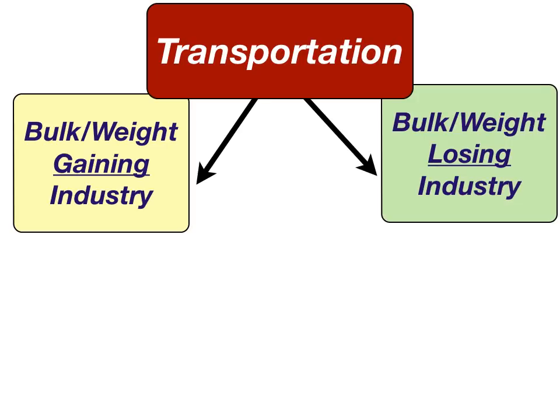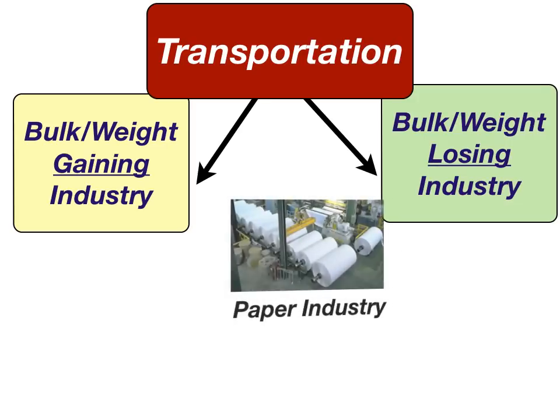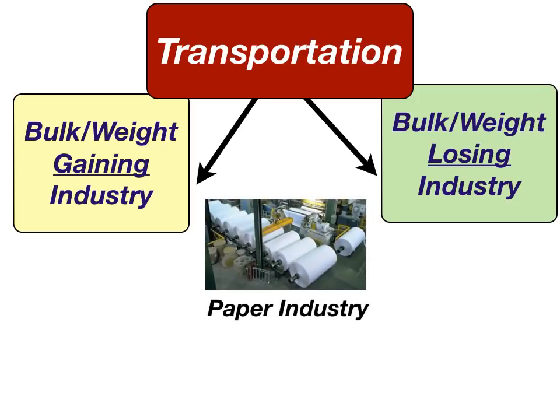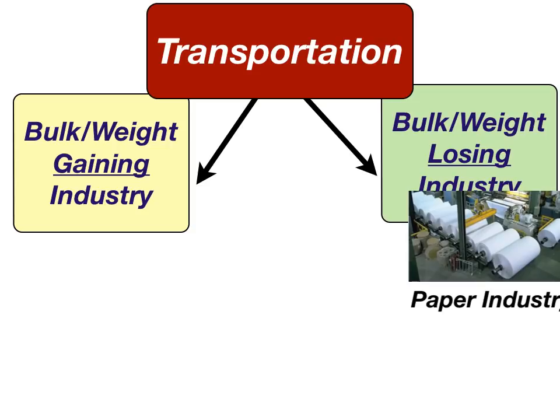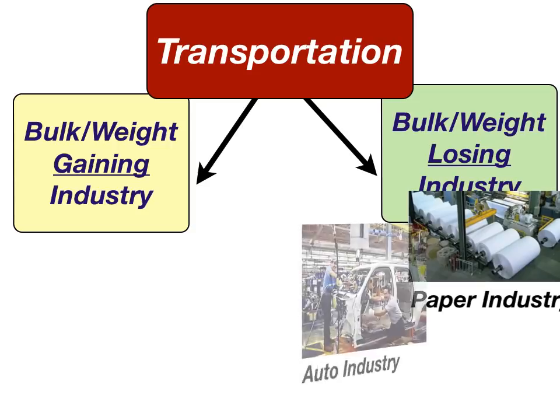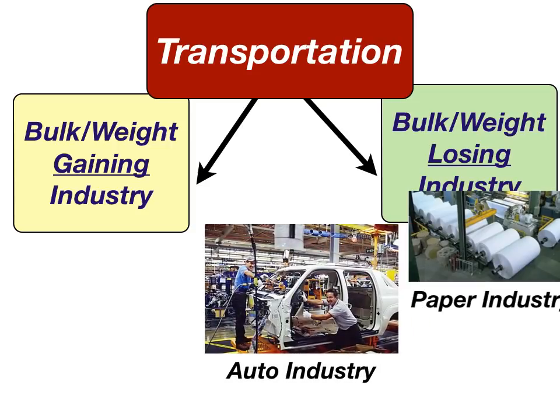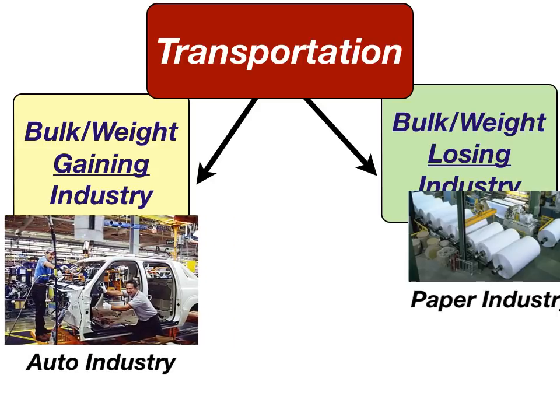Let's figure out what these two types mean by looking at examples. Paper is made with trees. Trees weigh a lot, but paper weighs a lot less than a tree, so that is considered a bulk or weight losing industry. Cars weigh a lot when finally produced, but the individual parts do not weigh as much, so cars are classified as a bulk or weight gaining industry.